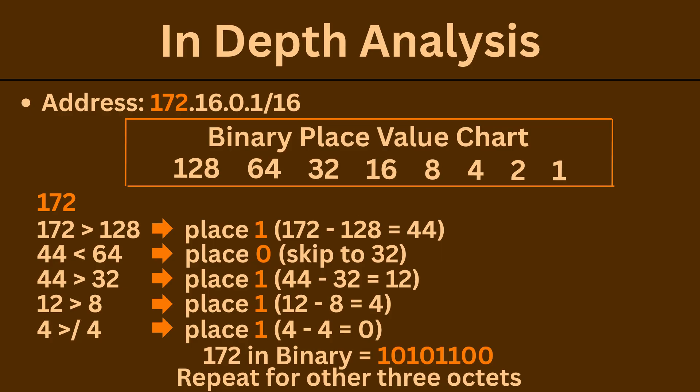12 is greater than or equal to 8, so we place a 1, then subtract — we're left with 4. 4 is greater than or equal to 4, so we place a 1, then subtract. There's nothing left for 2 and 1, so we place a 0 for both. You repeat that process for the other three octets.